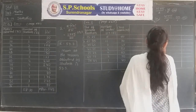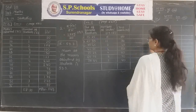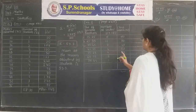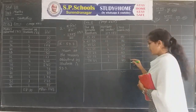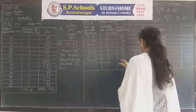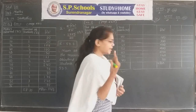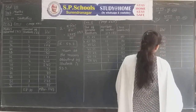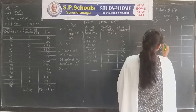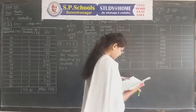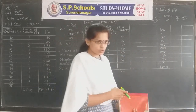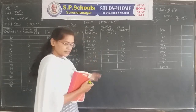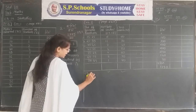Calculating fi × xi: 6 × 20 = 120, 11 × 30 = 330, 7 × 40 = 280, 4 × 50 = 200, 4 × 60 = 240, 2 × 70 = 140, 1 × 80 = 80. Adding fi·xi to get Σfi·xi = 1390. The table for the direct method is now completed.